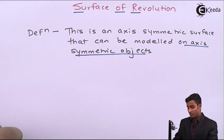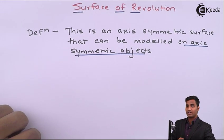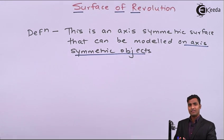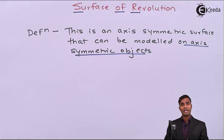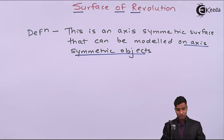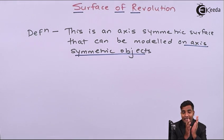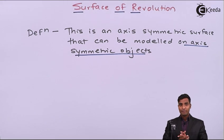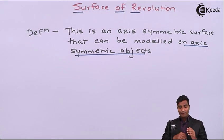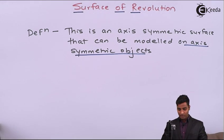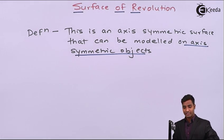The surface of revolution can only be done for axis-symmetric objects. Axis-symmetric objects are basically rectangle, triangle, and trapezium. It is generated by rotating a planar wire-frame entity in space about the axis of symmetry with a certain height. We can take one example of how surface of revolution takes place.